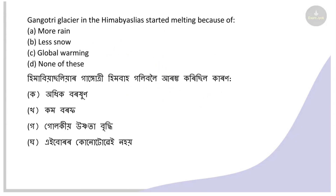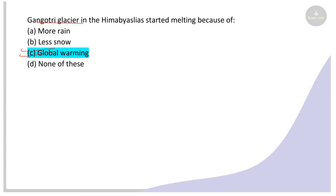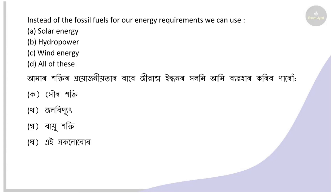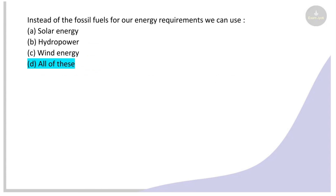Next: The Gangotri Glacier in the Himalayas started melting because of what? Options: more rain, less rain, global warming, none of these. The right answer is global warming. Next: Instead of fossil fuels for energy requirements, we can use what? Options: solar energy, hydropower energy, wind energy, all of these. The right answer is all of these.